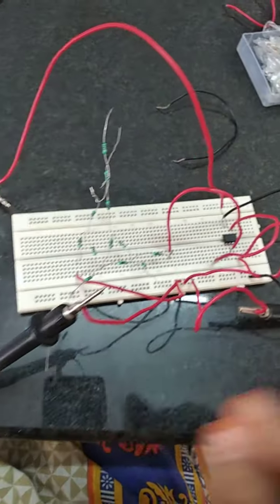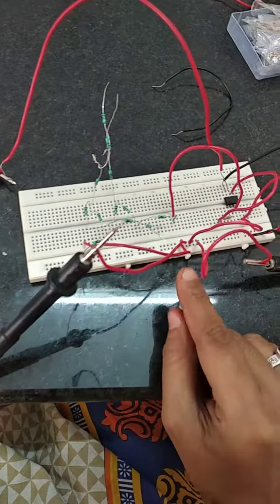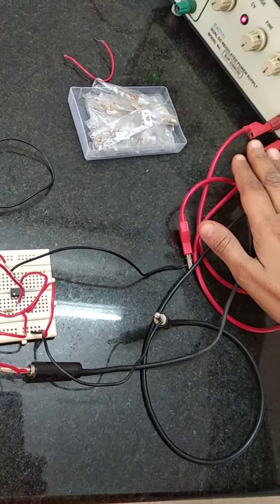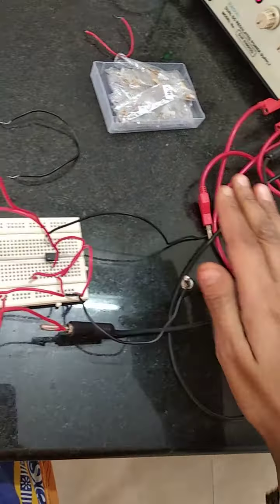You can see this probe is connected to this wire at the number 6, and this black one is connected to the ground. We have given supply from this voltage supply.